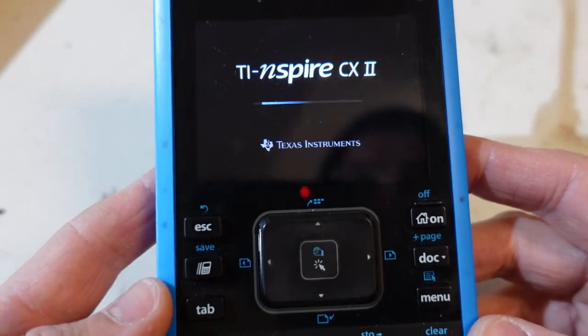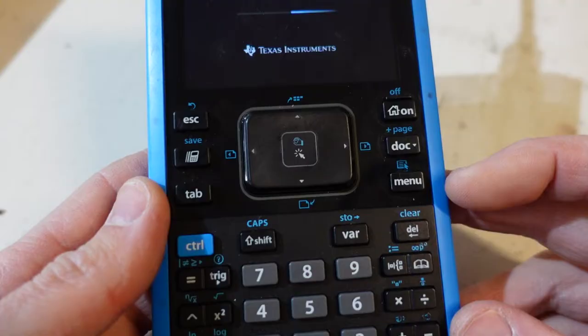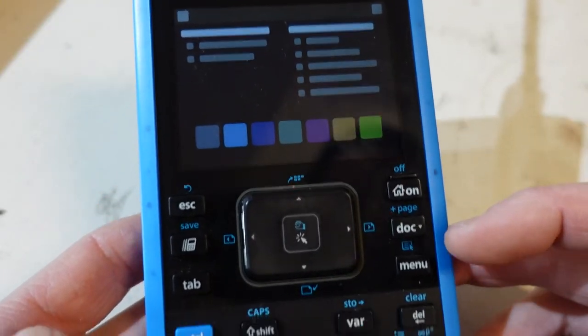So right now I've got a TI CX2 and this one is boot looping. What I want to do is enter maintenance mode.